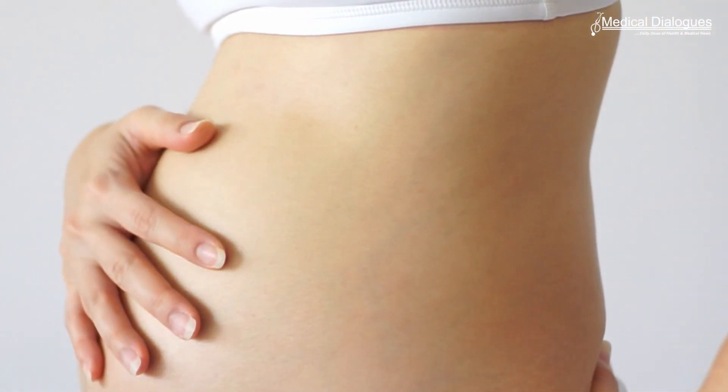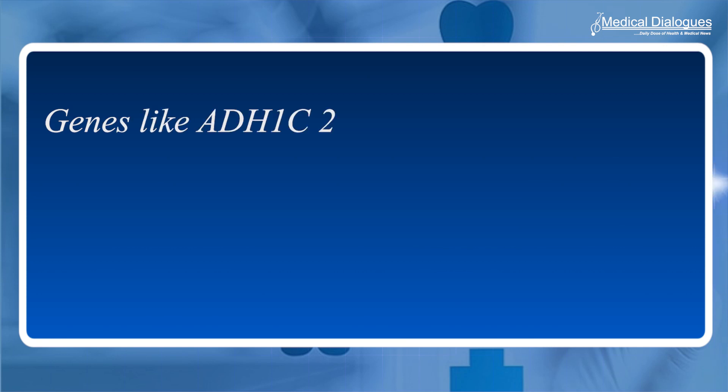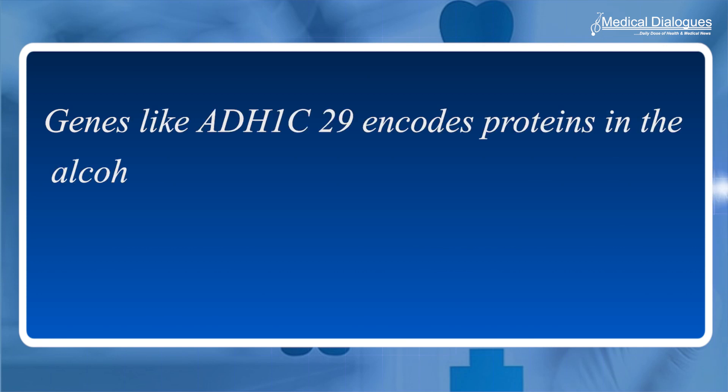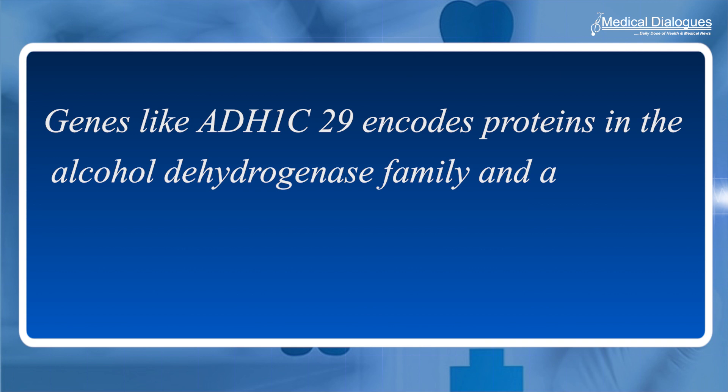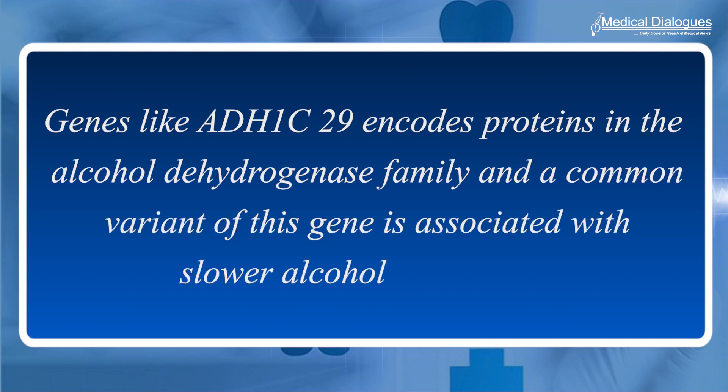Alcohol exposure in pregnancy is associated with miscarriage risk. Genes like ADH1C encode proteins in the alcohol dehydrogenase family, and a common variant of this gene is associated with slower alcohol metabolism. Individuals who are homozygous for the variant metabolize alcohol at half the rate of individuals without the variant, and therefore have prolonged exposure to circulating alcohol for similar levels of consumption.